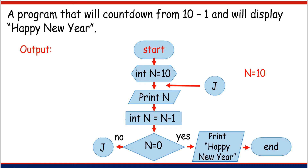Let's see how this flowchart works. Start. Int n is equal to 10 — the value of our n is 10. Print n — the first output is 10. Then continue with the process: int n is equal to n minus 1. The previous value is 10, and 10 minus 1 is equal to 9, so the new value of n is 9. Go to the decision symbol: n equals 0, or 9 equals 0 — the answer is no. We go to the no direction. The program enters and exits the J on-page connector, then prints the value of n, which is 9.